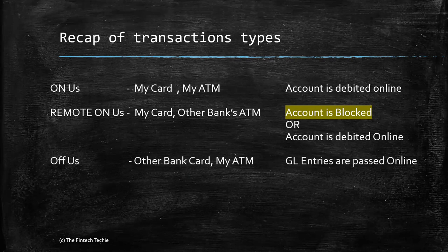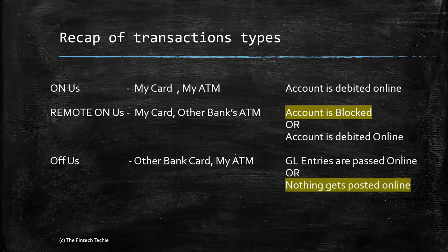Finally, we have office transactions, which means another bank's card used in my ATM. In this case, because the bank's own customer is not involved, GL entries are passed online or nothing gets posted online — it happens as an end-of-day batch since there is no urgency as the customer account is not involved. These are the three types of transactions.